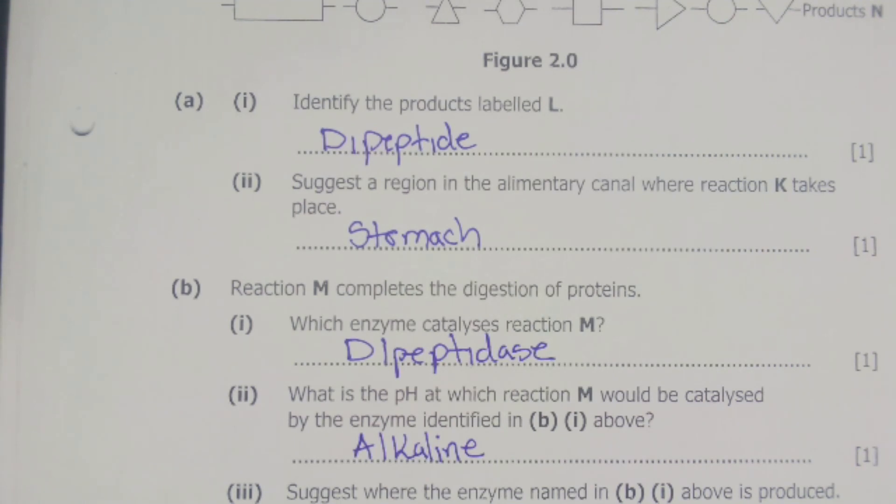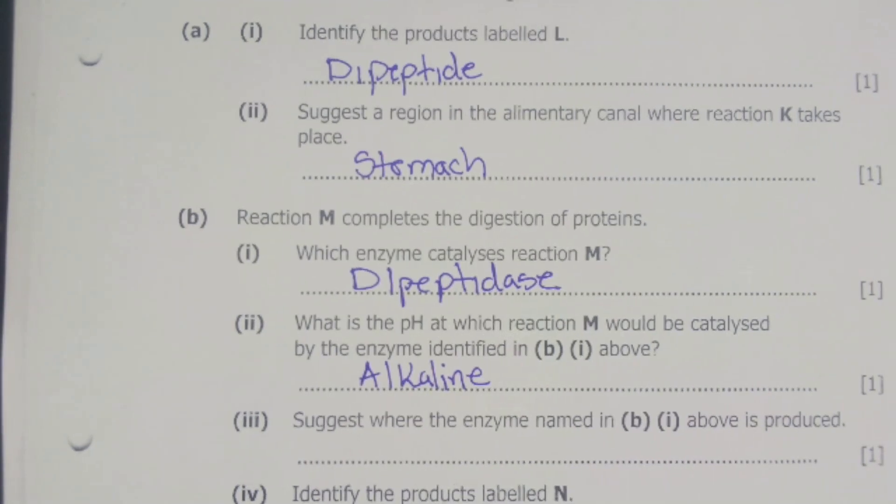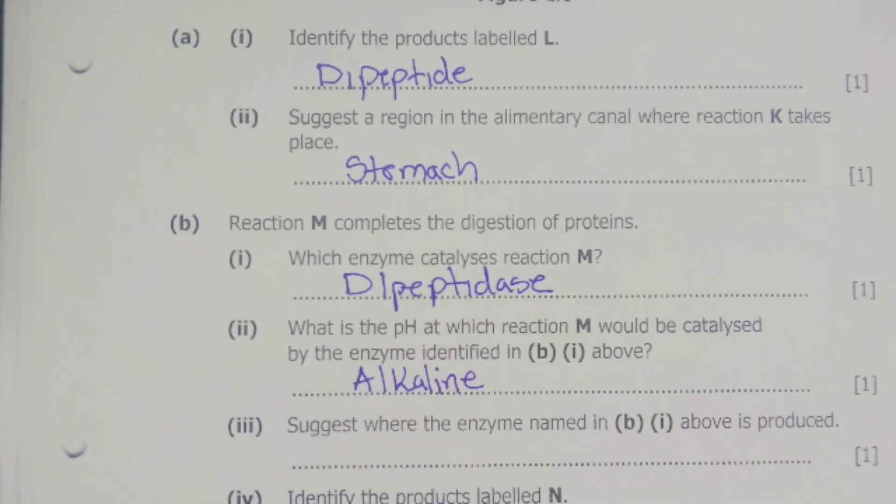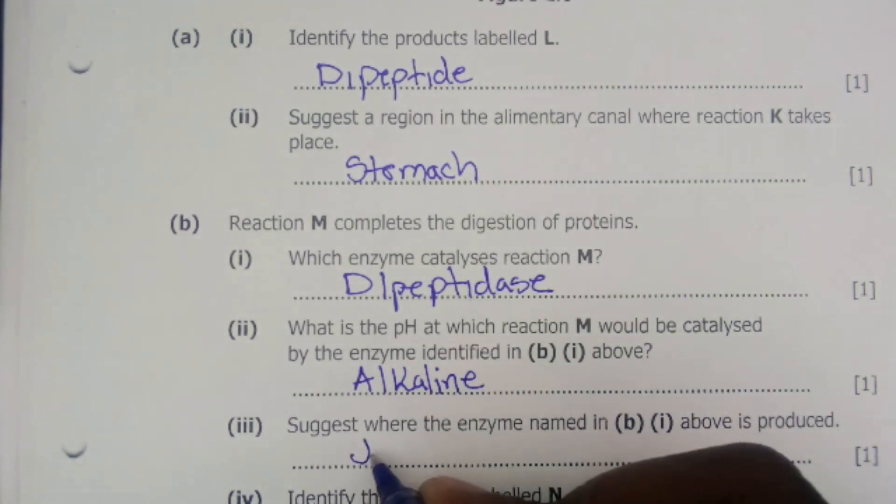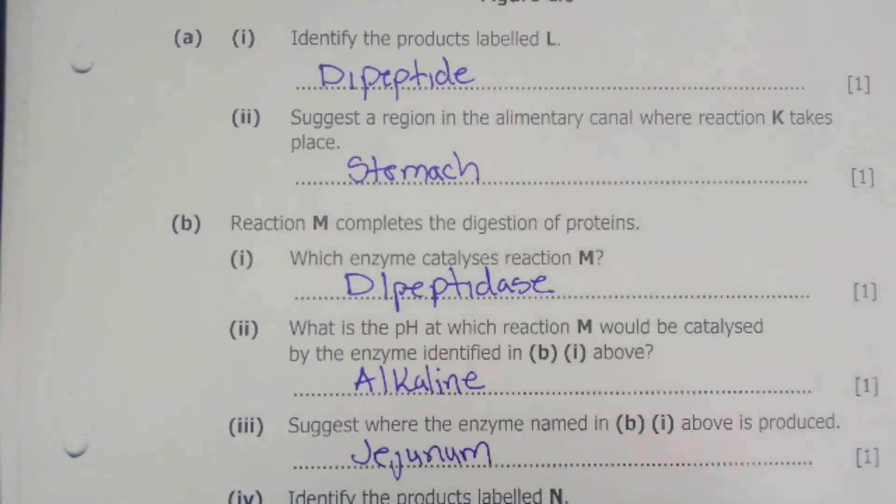Then the next question is B3. B3 says suggest where the enzyme named in B1 above is produced. Dipeptidase is actually produced in the duodenum, which is the last part of the alimentary canal.